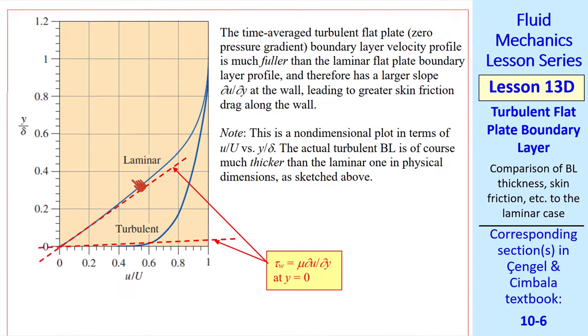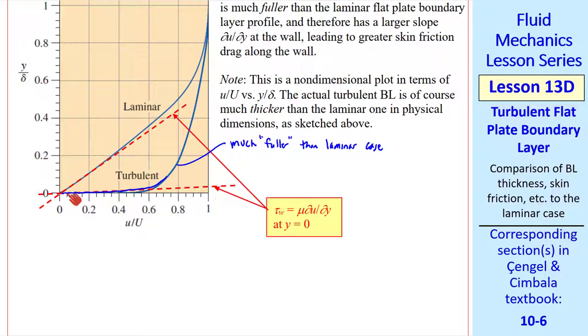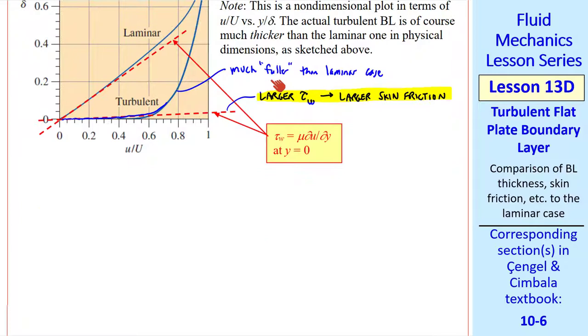Let's examine the boundary layer profiles. For the laminar case, this curve is the Blasius boundary layer profile, and the slope at the wall times mu is tau w. Here's a sketch of the turbulent boundary layer, which is much fuller than the laminar case. The slope del u del y at the wall is much larger. In other words, u is increasing more rapidly with y for the turbulent case. This larger tau w leads to larger skin friction for the turbulent case.